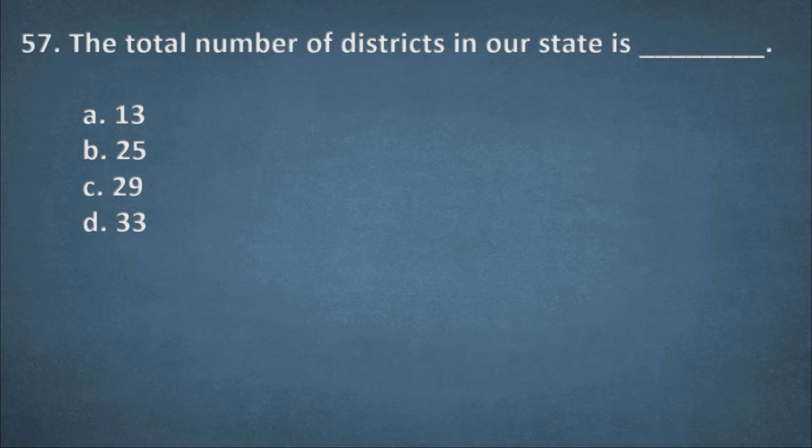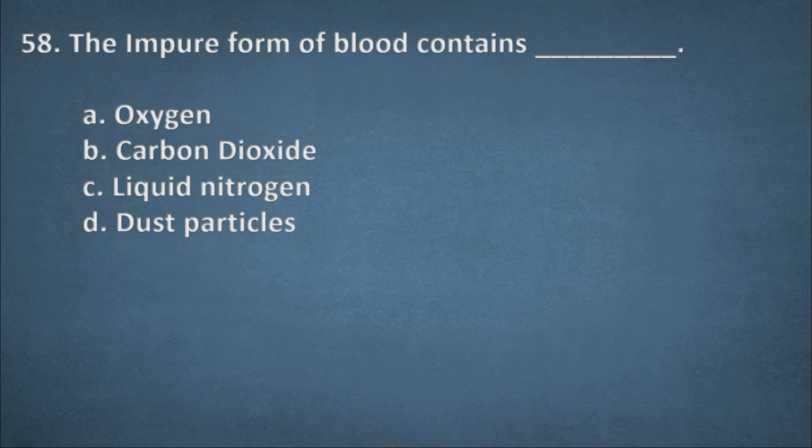Next one. The total number of districts in our state is. Options: 13, 25, 29, 33. The right option, D, 33. Next one. The impure form of blood contains. Options: Oxygen, Carbon dioxide, Liquid nitrogen, Dust particles. The right option, B, Carbon dioxide.